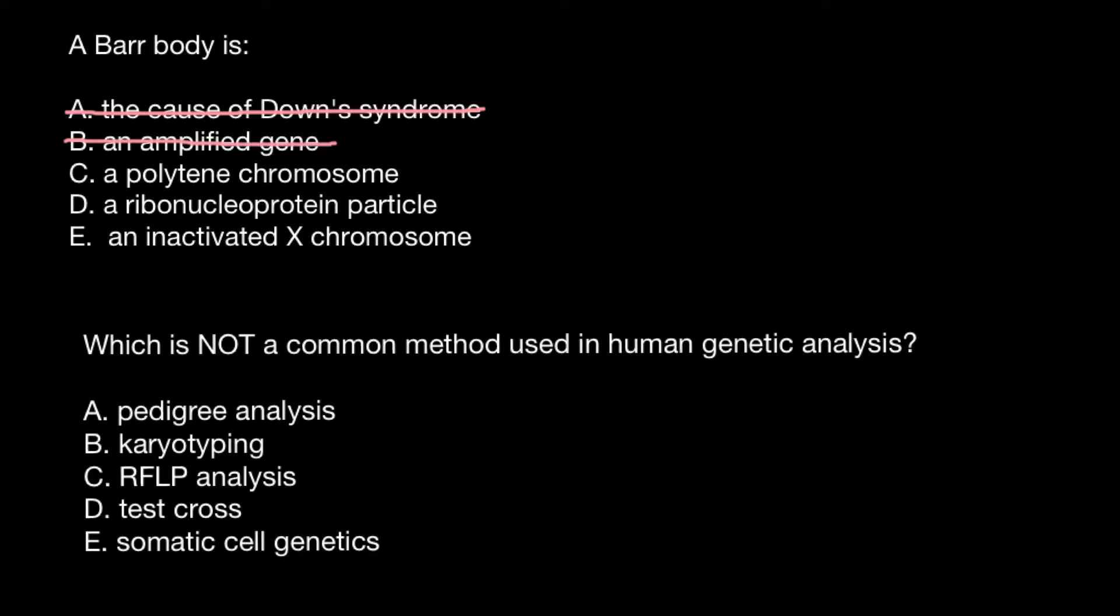Answer C, polytene chromosome. Polytene chromosomes we can find, for example, in such insects as Drosophila melanogaster in some specialized cells, in salivary glands. This is when one chromosome would replicate many times and all these chromosomes would be connected. The cell wouldn't go through the process of division, and such chromosome we would call polytene chromosome. So this also doesn't answer our question.